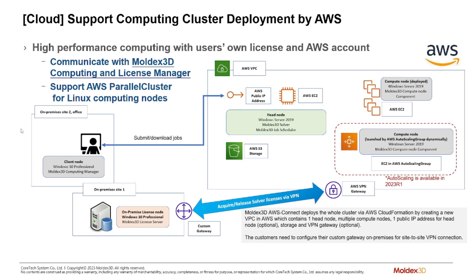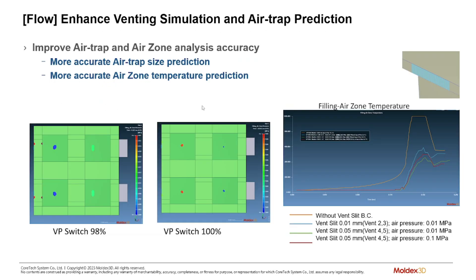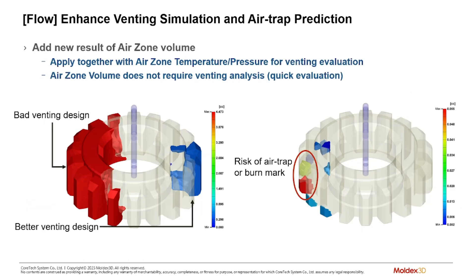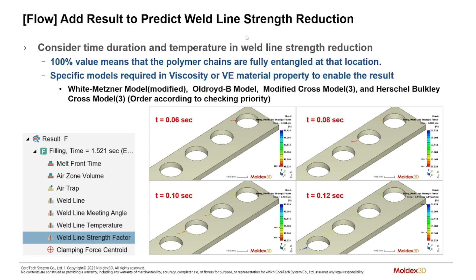For the flow calculation, we have improved our venting simulation to enhance the air trap prediction. The air zone volume and the air zone temperature and pressure will allow you to see how much air is being trapped and the conditions of that trapped air — whether it's going to cause burn marks or just an air trap in the parts.